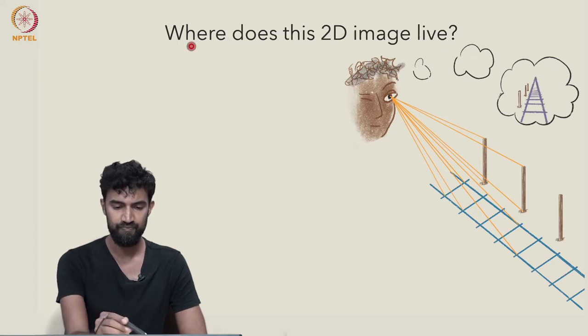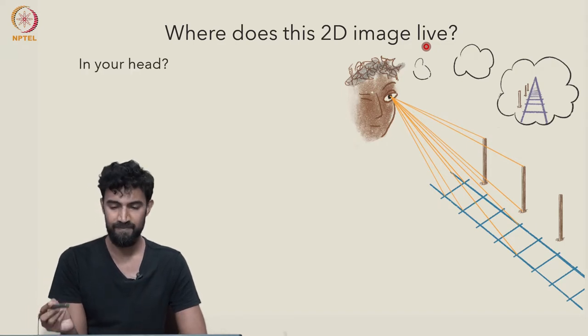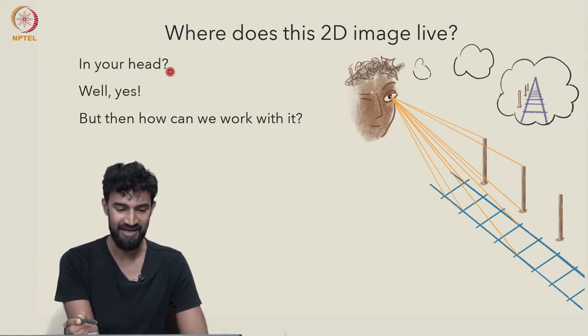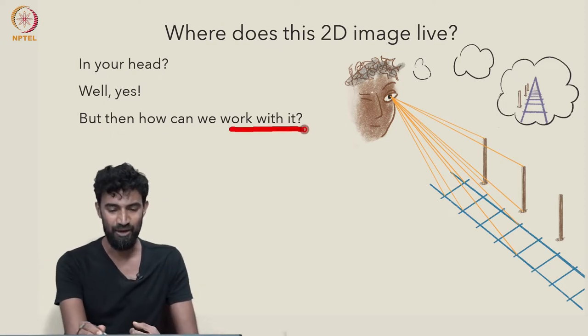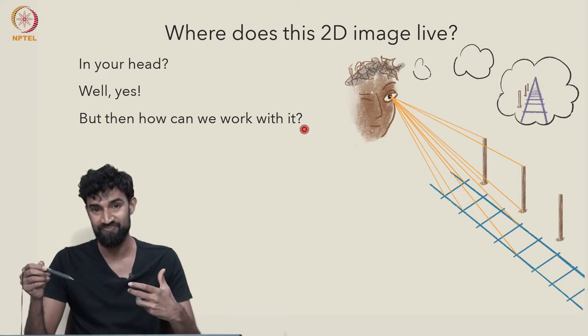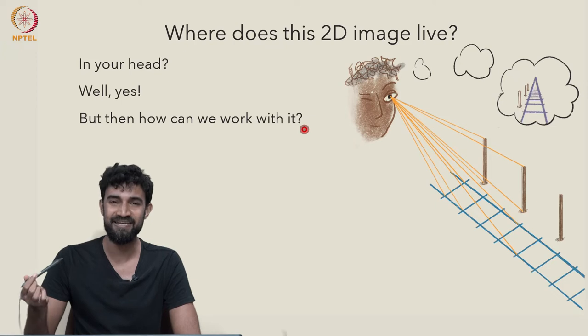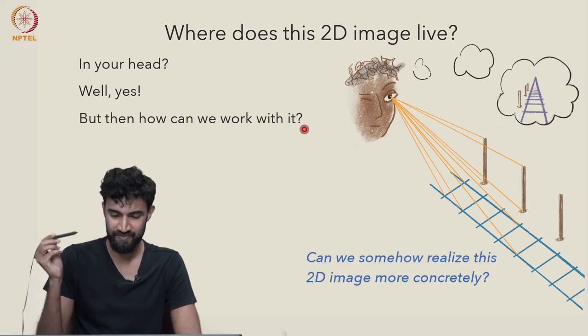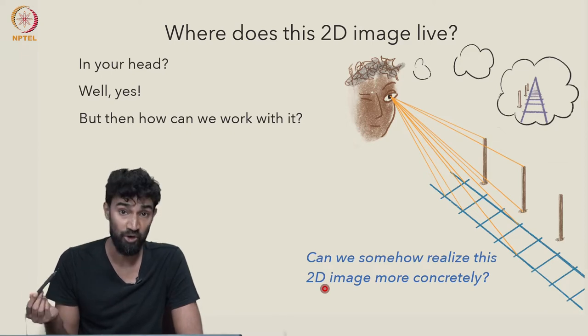And then the question is, where does this two-dimensional image live? Is it just in your head? And it is. It's being formed in your head. But in that case, how can we actually work with it if it's just in your imagination? Does it exist in any stronger sense? Can we somehow realize this two-dimensional image more concretely?